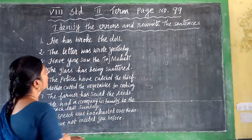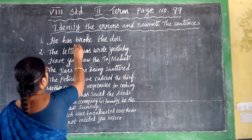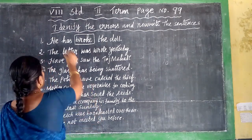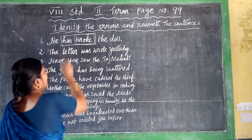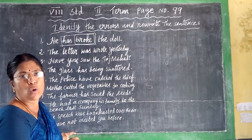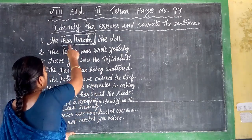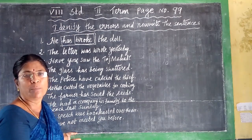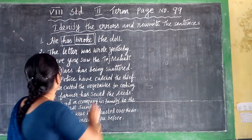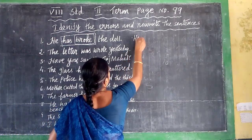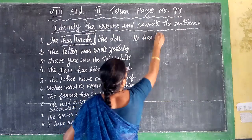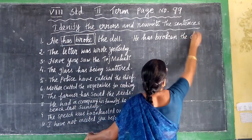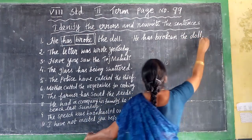Sentence: 'He has broke the door.' Here, 'broke' is a past tense form. In the sentence, the verb given is 'has broke.' Has is always followed by the 3rd form of the verb. So the correct answer is: 'He has broken the door.'